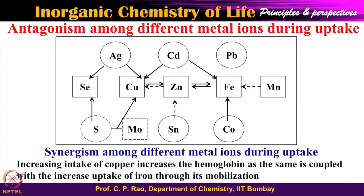What is negative and what is positive? Negative is as follows: let us say when element X is taken more and more by the tissue, Y is taken less and less by the tissue. As the concentration of X increases, the concentration of Y decreases. This kind of interaction is called antagonism — X increases, Y decreases in absorption levels.